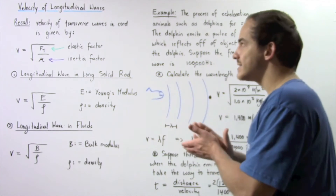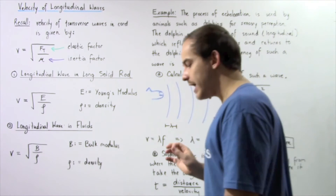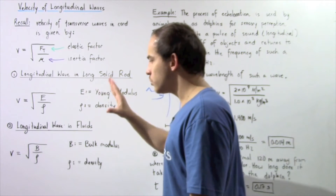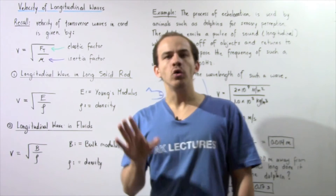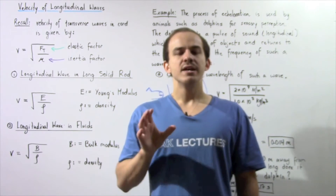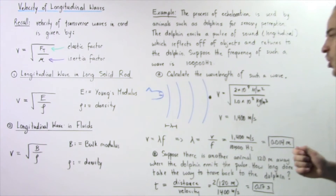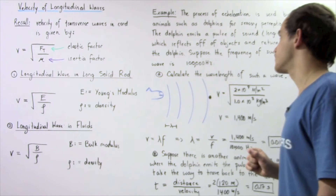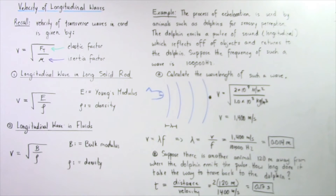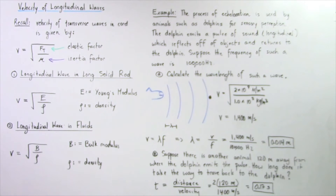So if we examine the velocity of any mechanical wave — transverse or longitudinal — we see that velocity only depends on the type of medium. Now let's look at an example applying one of these formulas. The process of echolocation is used by animals such as dolphins for sensory perception. The dolphin emits a pulse of sound, which is a longitudinal wave, which reflects off objects and returns back to the dolphin. Suppose the frequency of such a wave is 100,000 hertz.